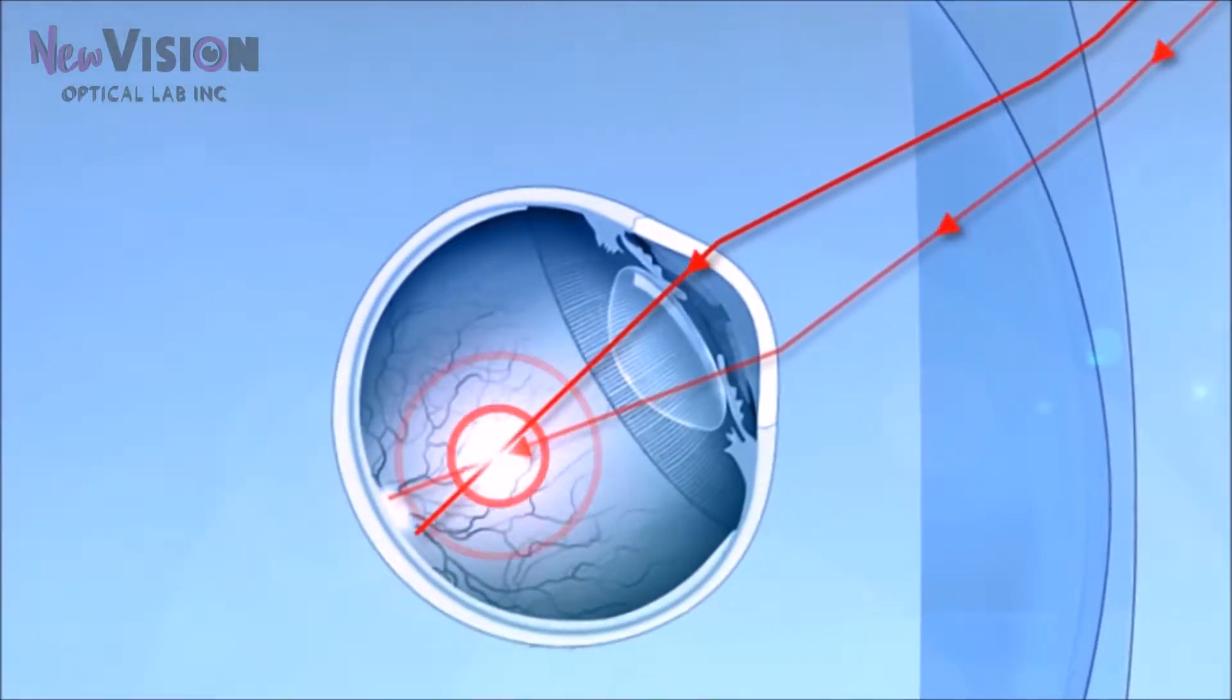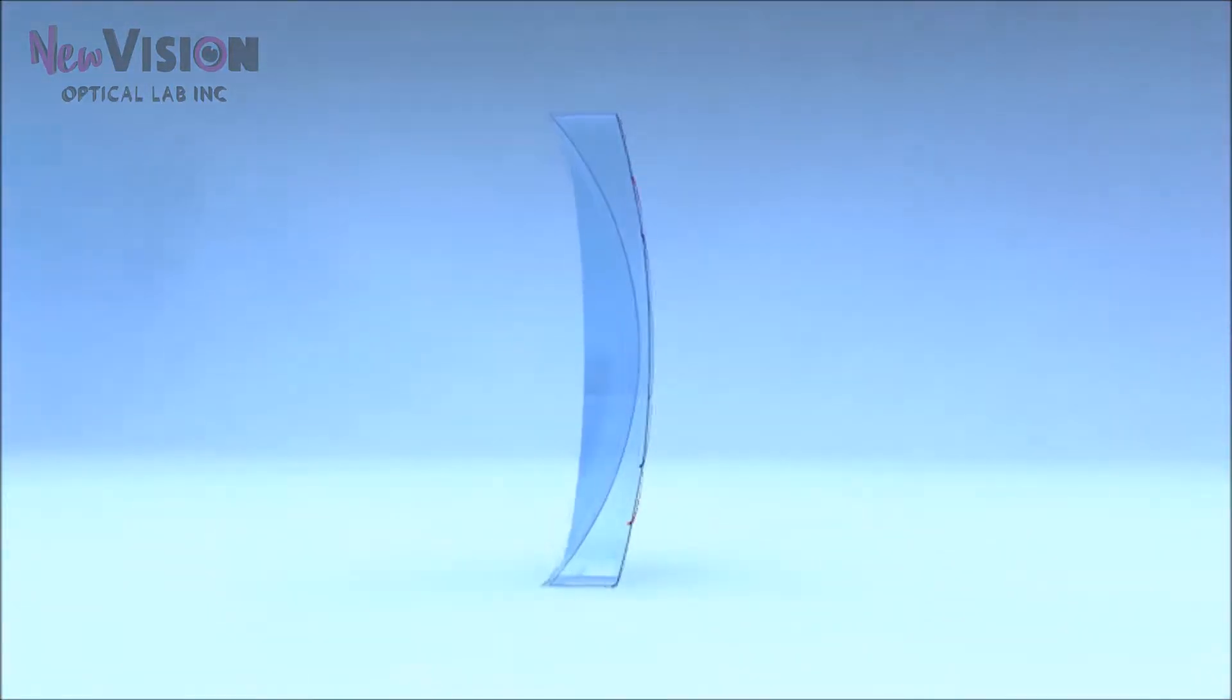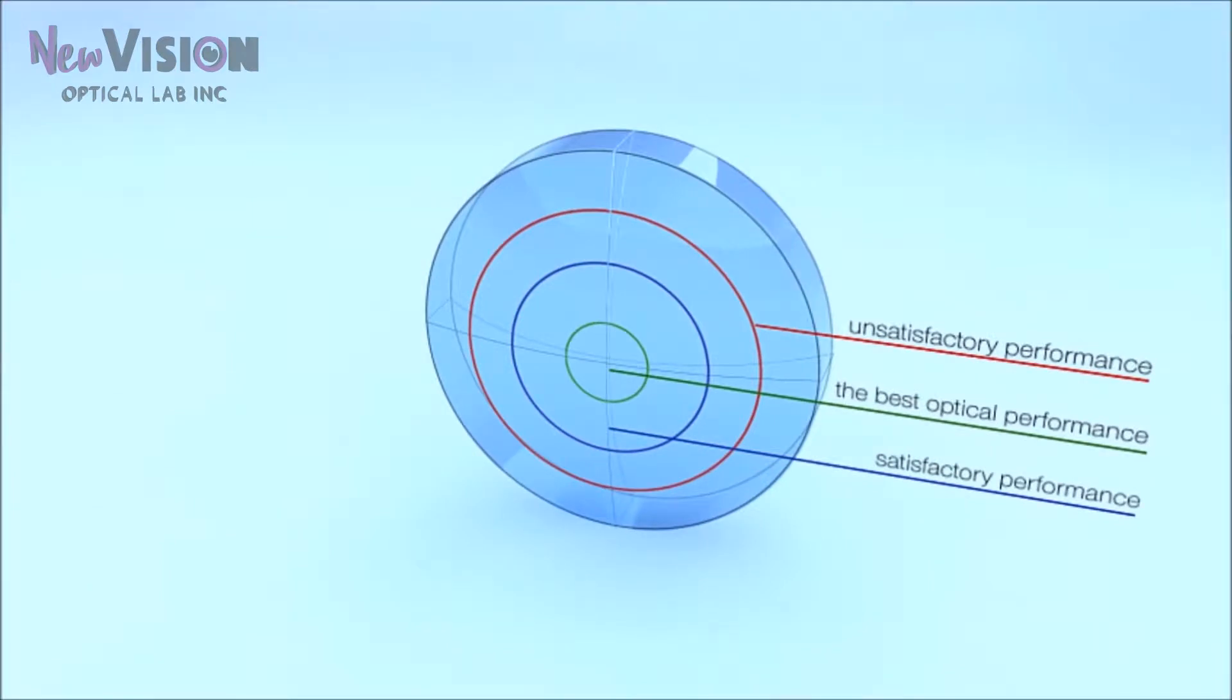Those lateral rays do not focus on the retina. Oblique aberration reduces the quality of vision outside the center of the lens. For high prescriptions and wrap frames, the effect is even stronger.